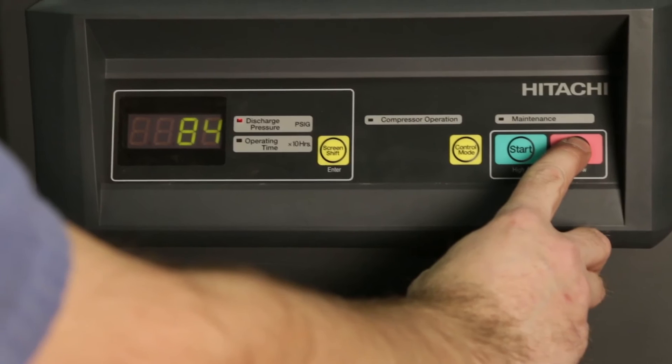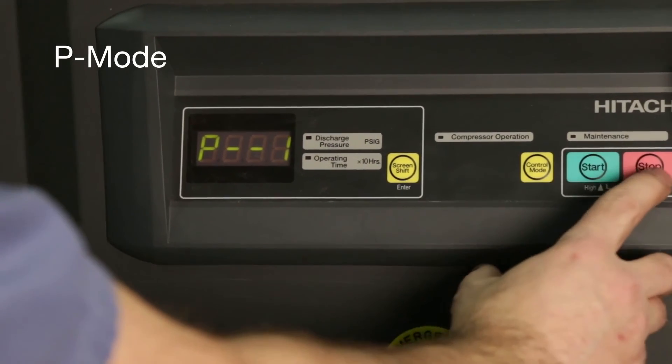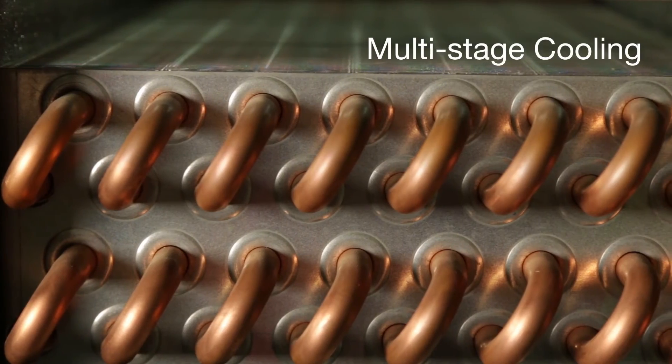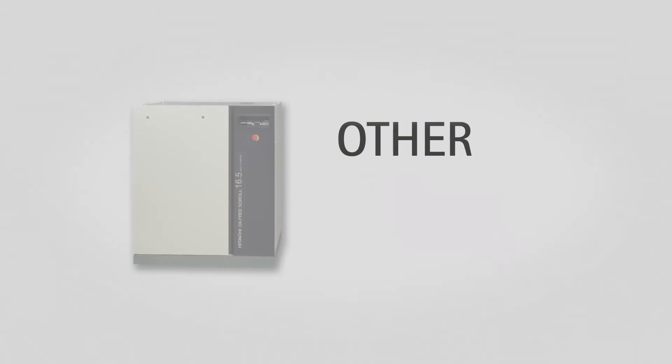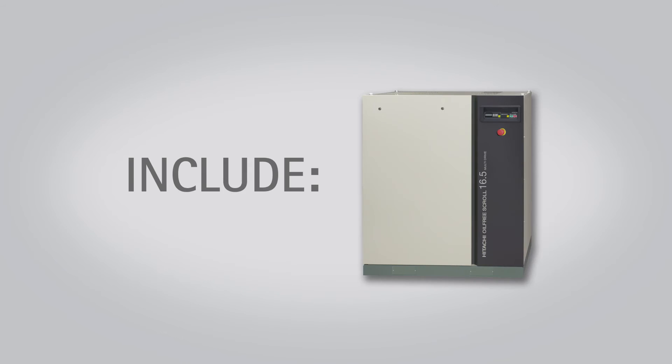Standard pressure control, or P-mode, is easily switched over with the press of a button. A multi-stage cooling system then ensures stable discharge temperatures.